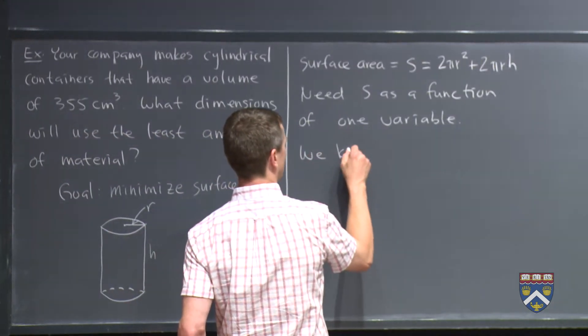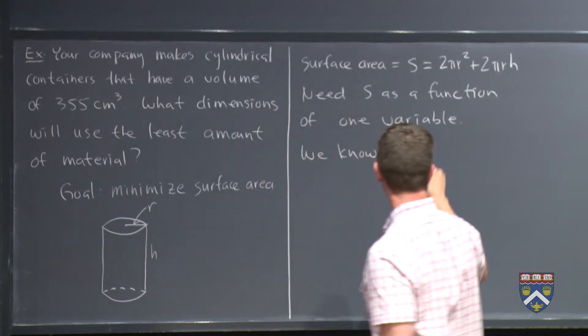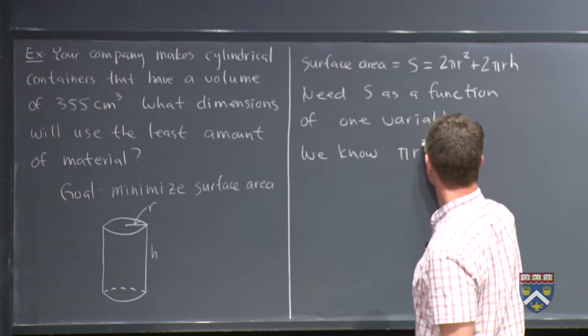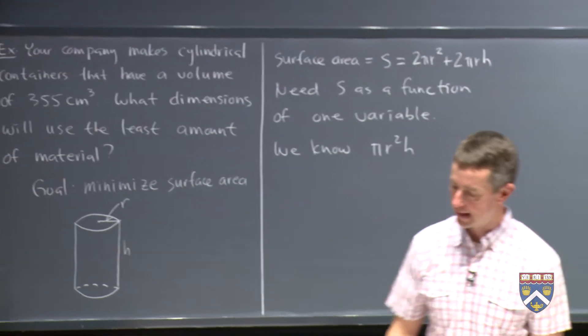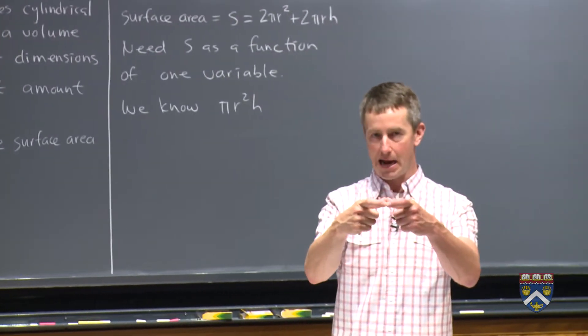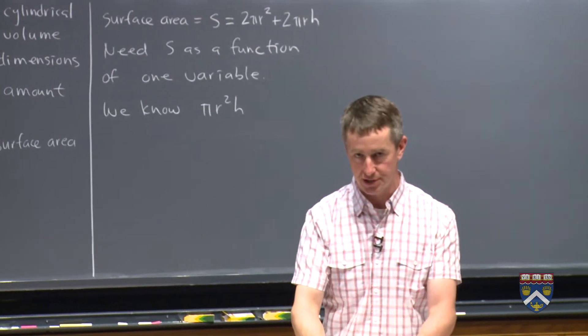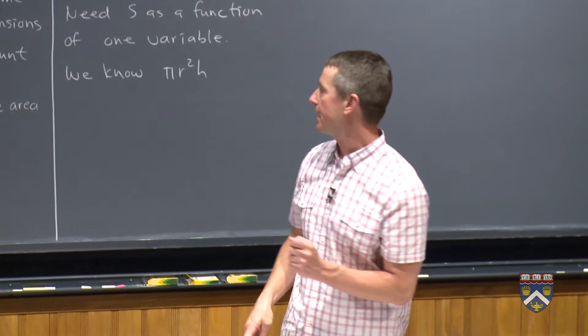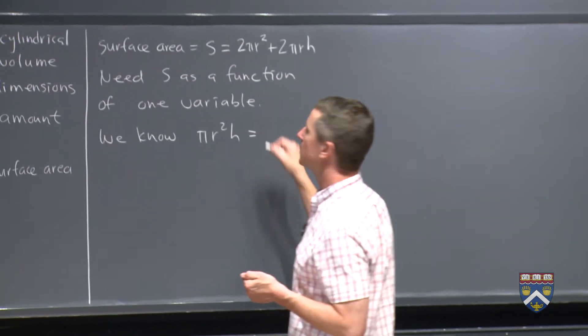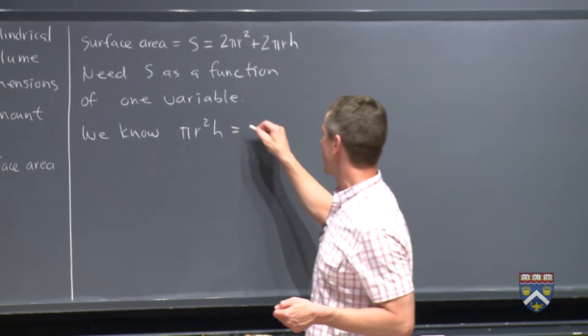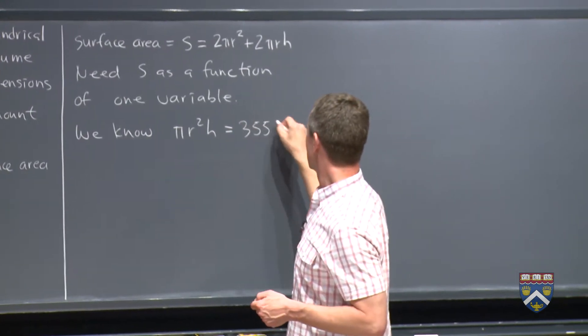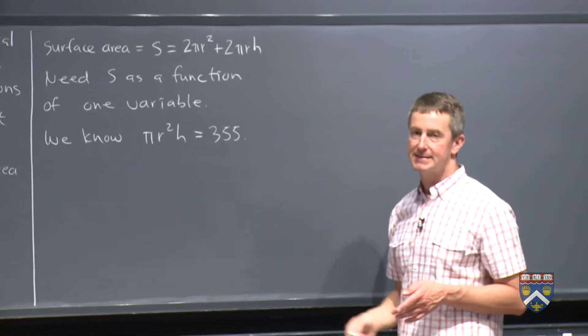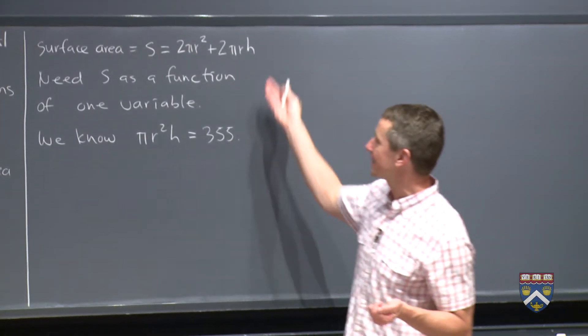We know the volume. We know that pi r squared h, that's the volume of a cylinder. Right? If I've got a cylinder, it's got an area of pi r squared and I'm just stretching it out, extending it by a factor of h, so the total volume is pi r squared h. What does pi r squared h equal, according to our problem, 355? So this is going to let us solve for either r or h and then stick that back into here.